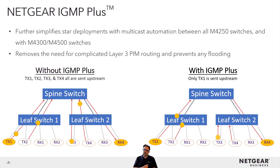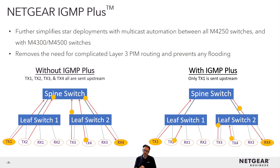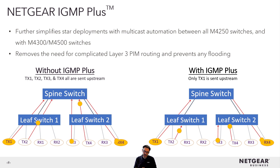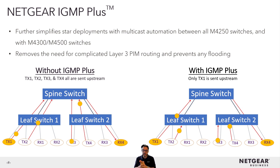If you have deployed AV over IP systems already, you know that IGMP is not the easiest to set up, and it doesn't always solve all of your problems. At Netgear, we fixed it, and we called it Netgear IGMP+. We solved that difficult equation where any multi-switch installation using IGMP is flooding multicast to the core of the network. With IGMP+, we are not flooding the network — only the clients that subscribe to a multicast stream will get that stream. No flooding, no configuration, no more IGMP deficiencies.